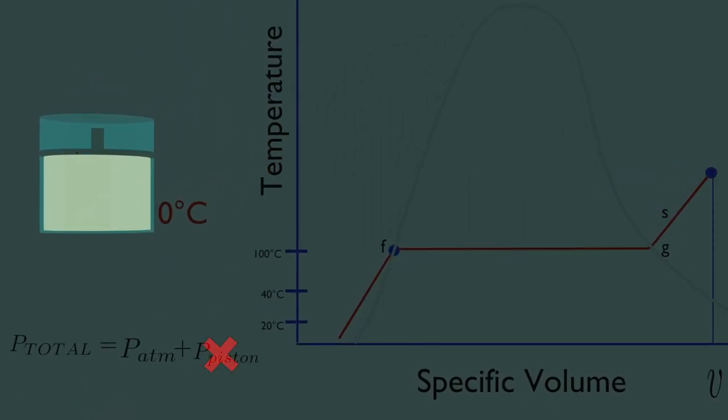Do you notice something? The whole phase change process happened at constant pressure. That is atmospheric or total pressure. So we heat the water at constant pressure and see how the temperature varies at this pressure. Remember, for now we are neglecting piston pressure. So always notice this appearance of constant pressure lines. They are very important.